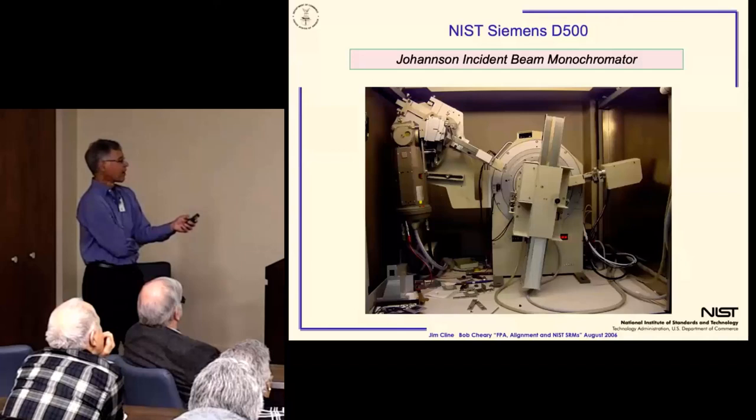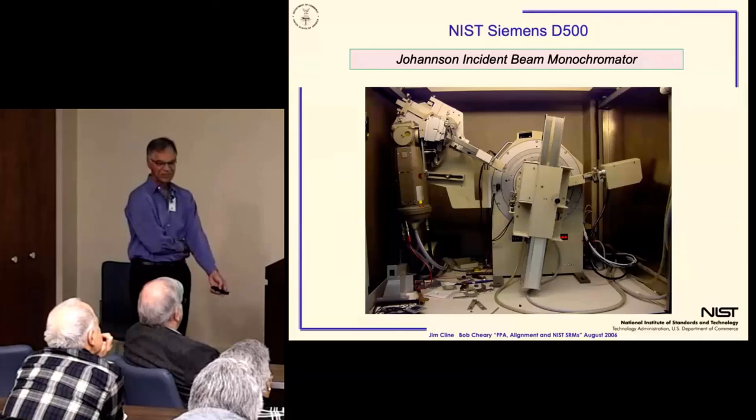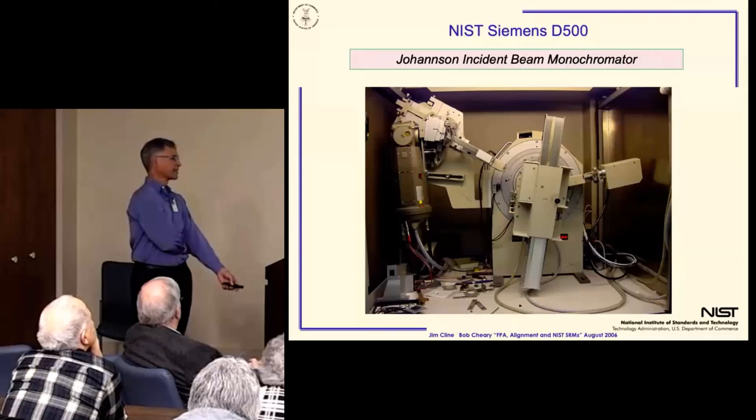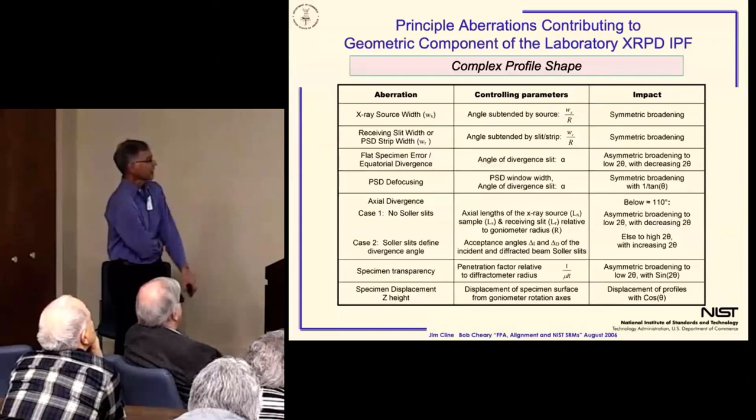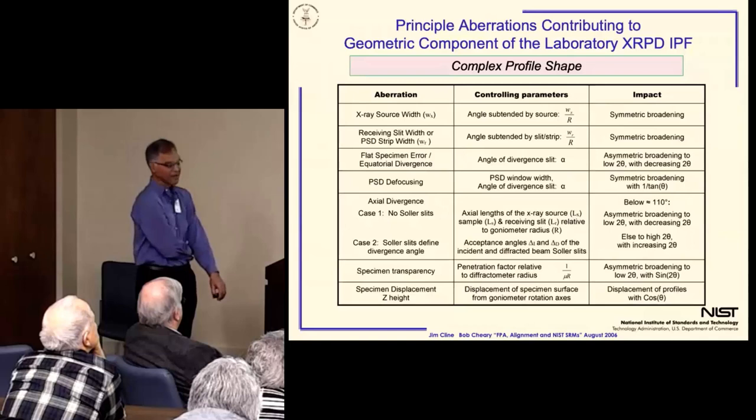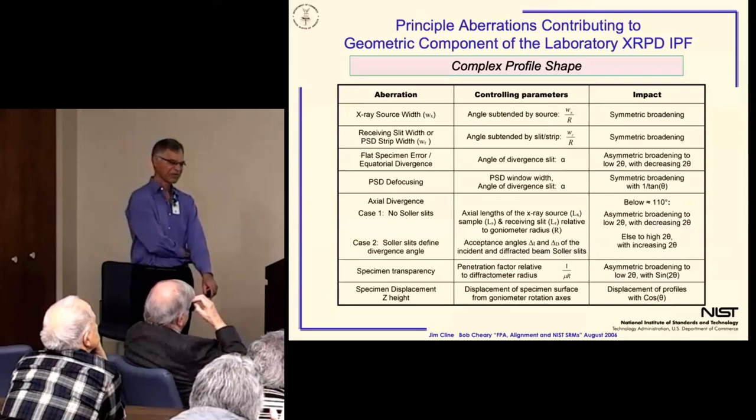This machine, of course, is equipped with a Johansson incident beam monochromator that imposes an otherwise somewhat Gaussian bandpass filter on the otherwise Lorentzian emission spectrum from copper.